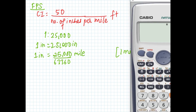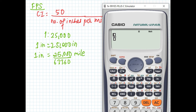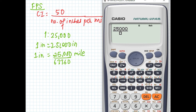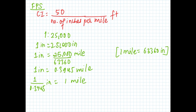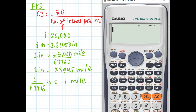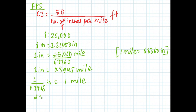Let's calculate: 25,000 divided by 63,360 gives 0.3945. So 0.1 inch equals 0.3945 miles. To find how many inches are in one mile, we calculate 1 divided by 0.3945, which gives 2.53 inches per mile.